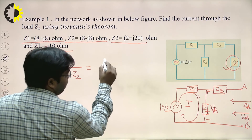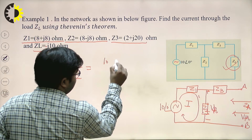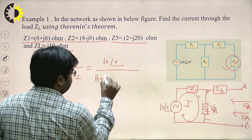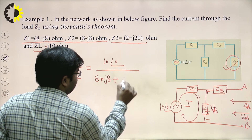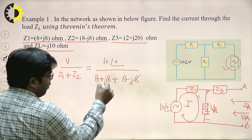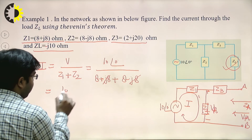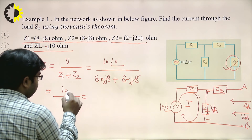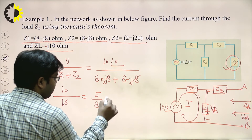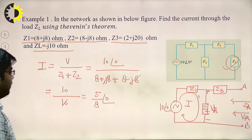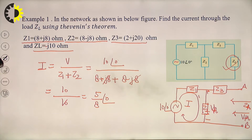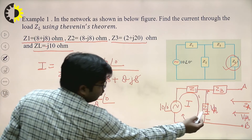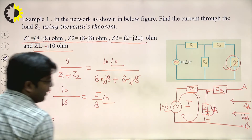The j8 terms cancel out, giving 10 divided by 16, which equals 5/8 at angle 0, or 0.625 at angle 0. Now multiply this current I with Z2 to get V_TH: I × Z2 = (5/8 at angle 0) × (8 − j8).